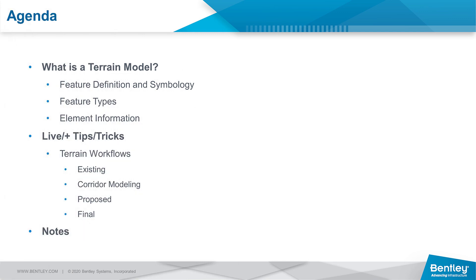So what we're going to talk about first and foremost is what is a terrain and what makes it up. We're going to take a look briefly at some feature definitions and symbology, what a feature type is. I'm not going to go through every single feature type, but we're going to talk about the ones that most people tend to overlook, and then really how we can understand them by looking at their element information. From that point, we're going to go through some live activities, tips and tricks, and discuss best practice workflows. There are a lot of things that users tend to leave out when thinking about terrains — a lot of times we cobble them together and don't understand that they have different needs at different stages of our design. And then lastly, I'll finish up with some notes.